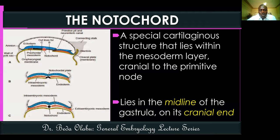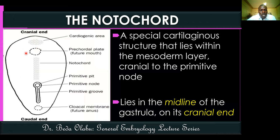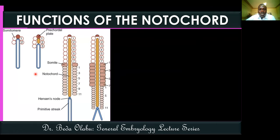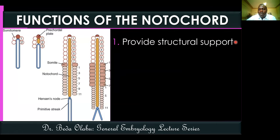The notochord is therefore within the gastrula, not the bilaminar embryo. In cross-section, it appears in the middle of the mesoderm layer, cranial to the primitive streak. The notochord provides structural support to the gastrula, just as the primitive streak provided structural support to the bilaminar embryo.